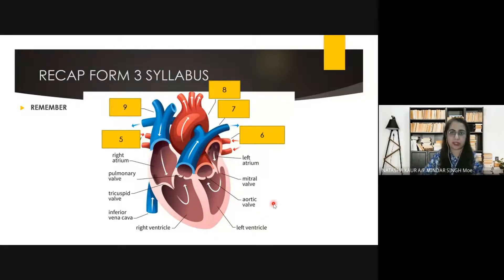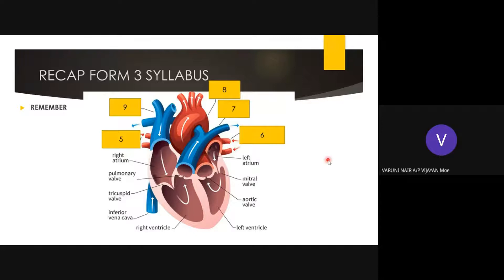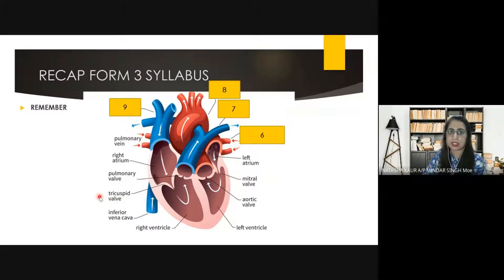And then number five — what is this? These vessels where oxygenated blood is going in here. What do you think it is? The pulmonary veins. Yes, that is the pulmonary veins.